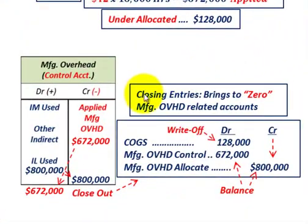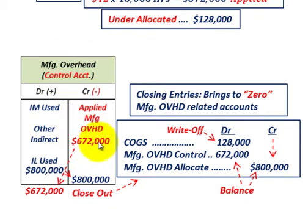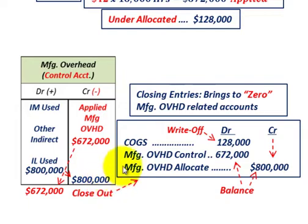For the closing entries to bring the manufacturing overhead-related accounts to zero: we debited cost of goods sold for that extra $128,000 under-allocated amount. Then for the manufacturing overhead control account, we had the $672,000 credit sitting in there, so we debit it out for $672,000 to clear it. And for the $800,000 actual cost that was debited in, we credit it for $800,000 to clear it out. That reflects the debits and credits for those accounts using the direct write-off method.